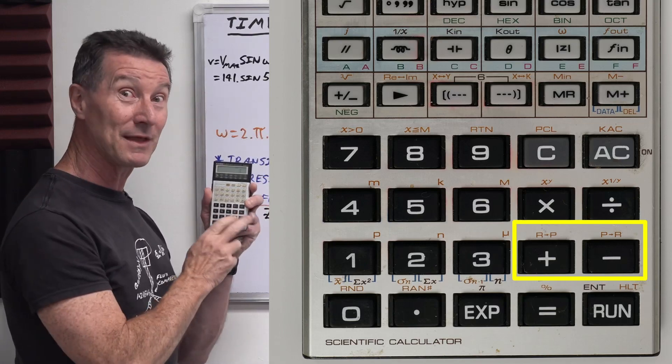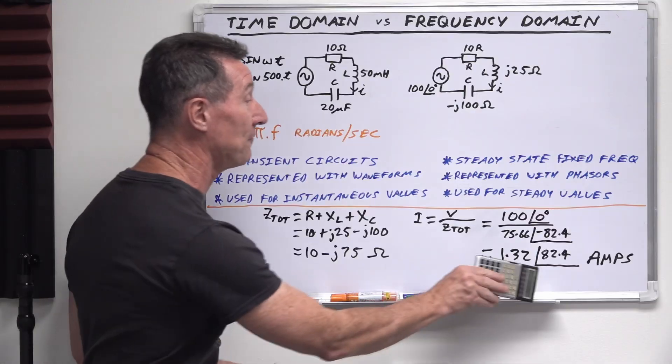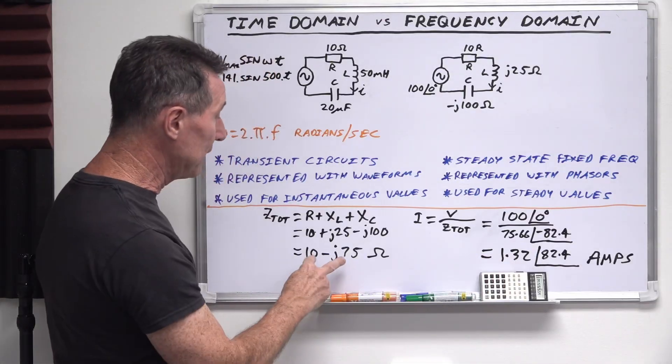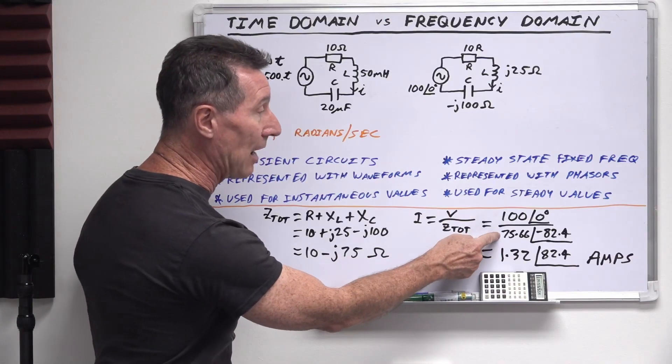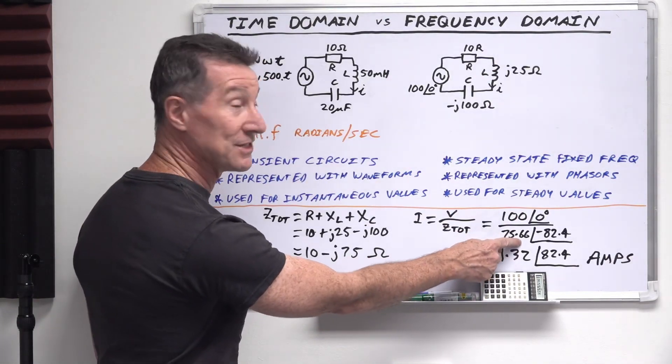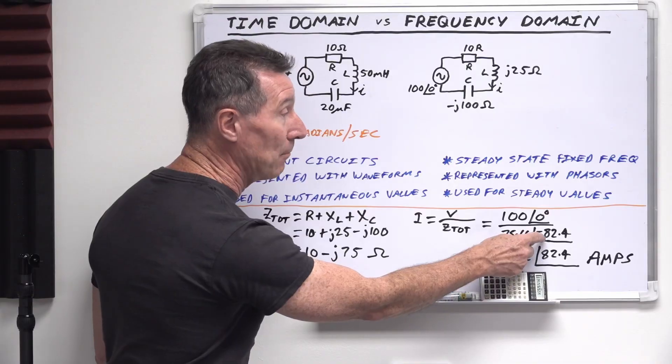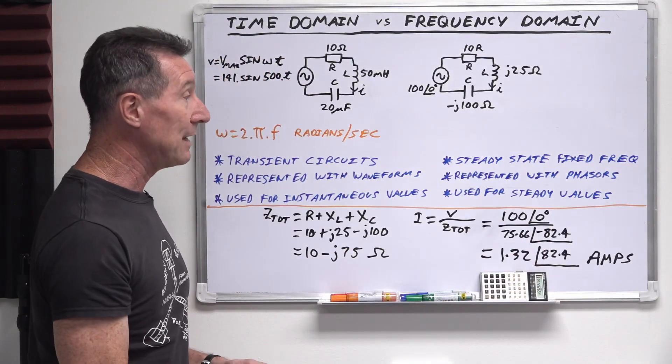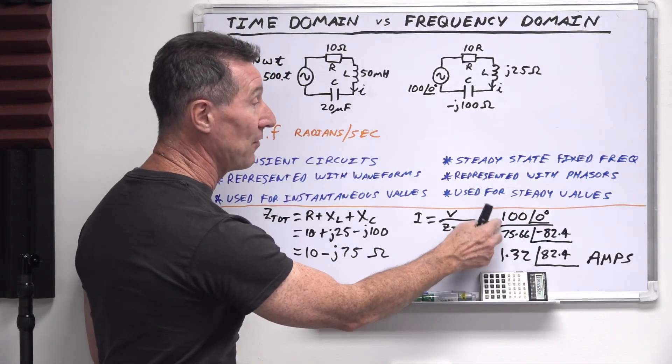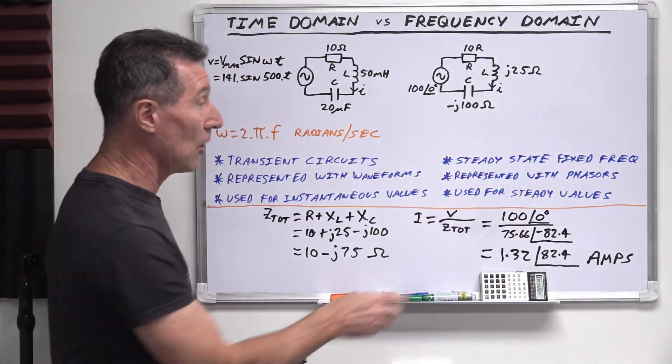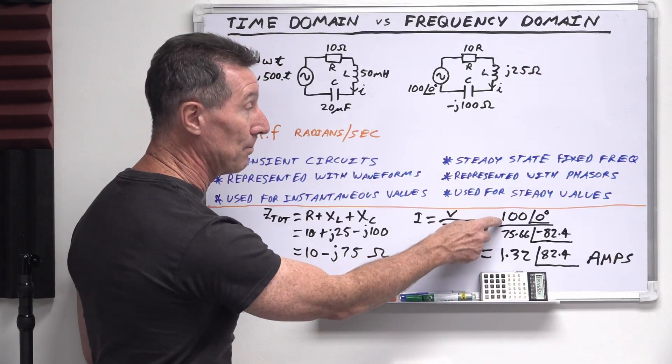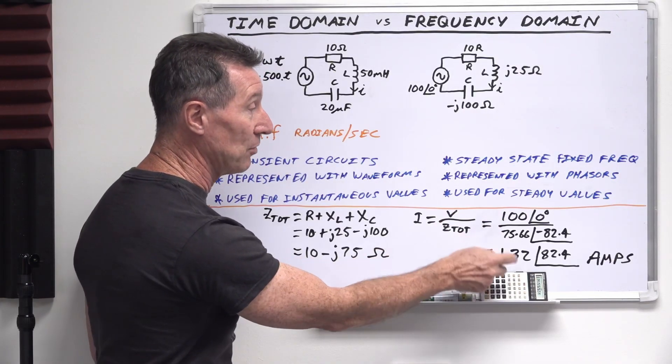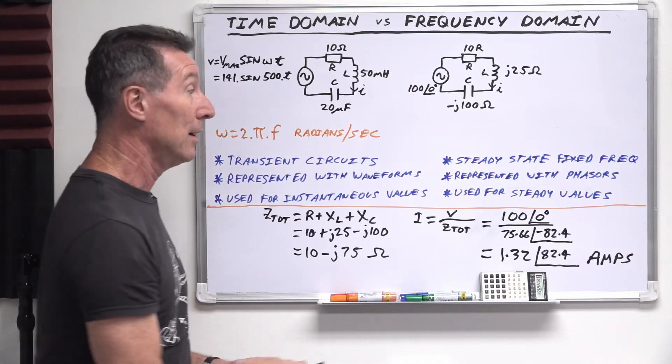I'll put that up in a screenshot up here. You can see that that's what they do, polar to rectangular. Watch my complex number video for that. So I've converted this rectangular form, 10 minus J75, into its polar form, which is 75.66 magnitude and minus 82.4 phase, like that. And so you simply divide two polar complex numbers like that. So it's 100 divided by 70. So the real component, 100, divided by 75.66 is 1.32 amps.